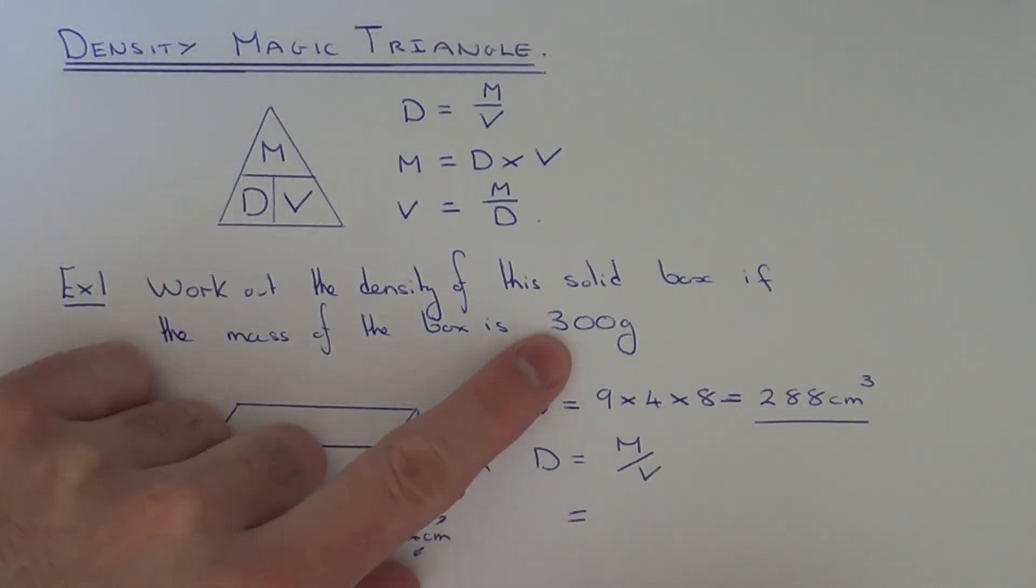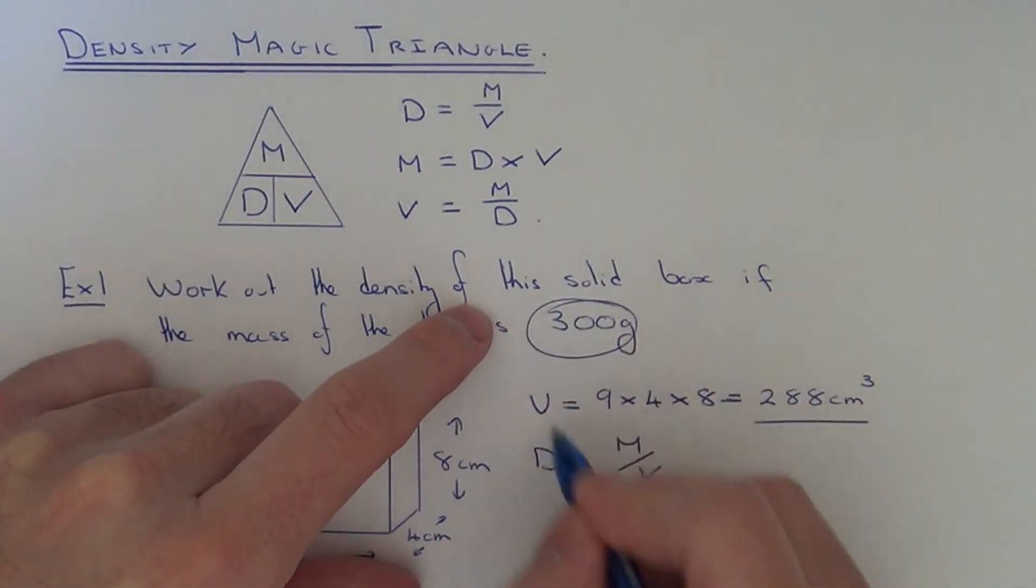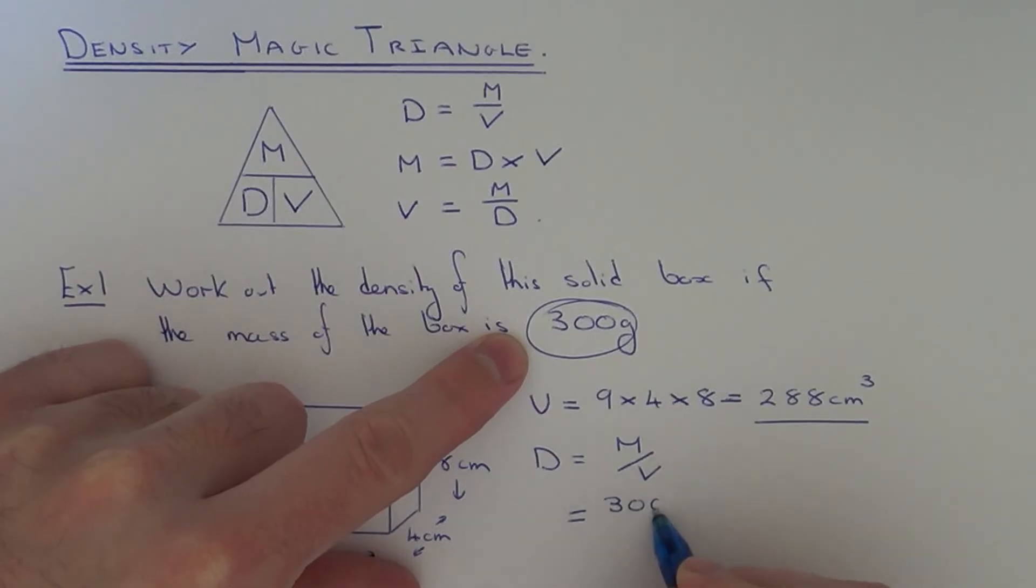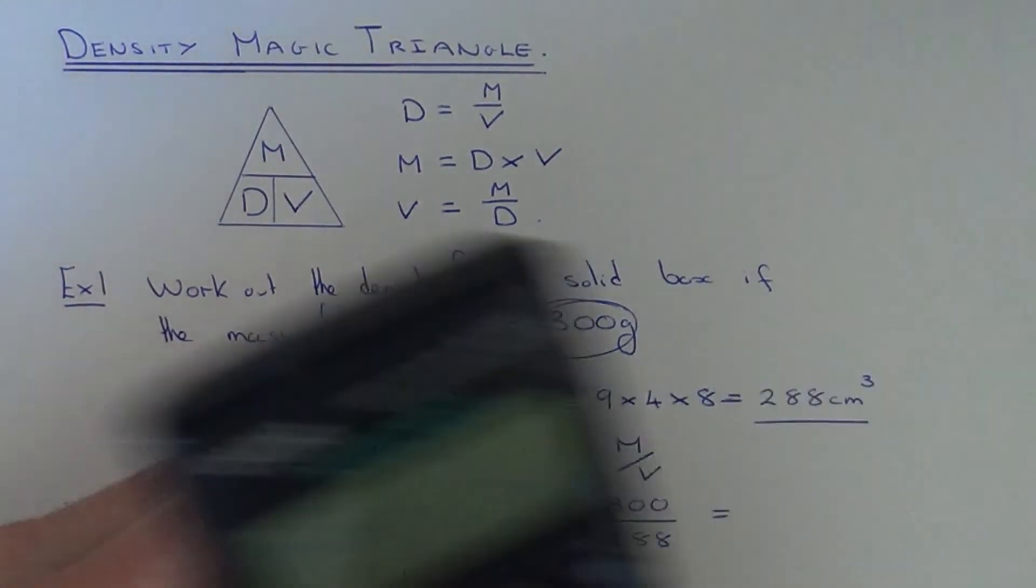The mass is given in the question, which is 300 grams. So you just need to do 300 divided by the volume of the box, which is 288cm cubed. Just put that in on your calculator.